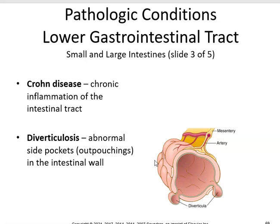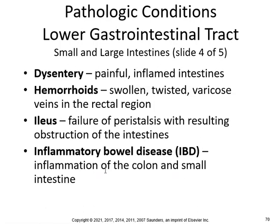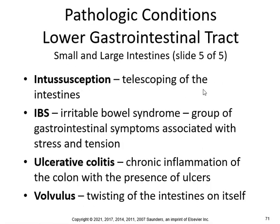Diverticulosis — abnormal side pockets, pouchings in the intestinal wall. This is not an anatomy class, so you don't need to know the mechanism — just the definitions. Dysentery is painful, inflamed intestines. Hemorrhoids — swollen, twisted varicose veins in the rectal region. Ileus — failure of peristalsis with resulting obstruction of the intestines. Inflammatory bowel disease — inflammation of the colon and small intestine. Intussusception is telescoping of the intestines. IBS — irritable bowel syndrome — group of GI symptoms associated with stress and tension. Ulcerative colitis — chronic inflammation of the colon in the presence of ulcers. Volvulus is twisting of the intestines on itself. That's dangerous.